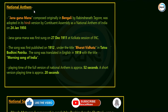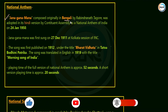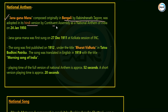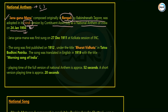The next topic is the National Anthem — Rashtriya Gaan. Everyone knows Jan Gan Man is the national anthem of India. Jan Gan Man was originally composed in Bengali by Rabindranath Tagore, and it was adopted in its Hindi version by the Constituent Assembly as the national anthem of India on 24th January 1950. Remember: the original version was in Bengali, and the Hindi version was adopted by the Constituent Assembly.